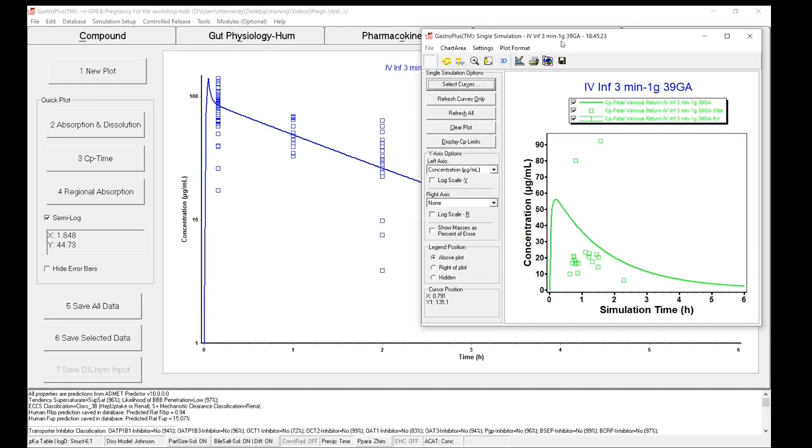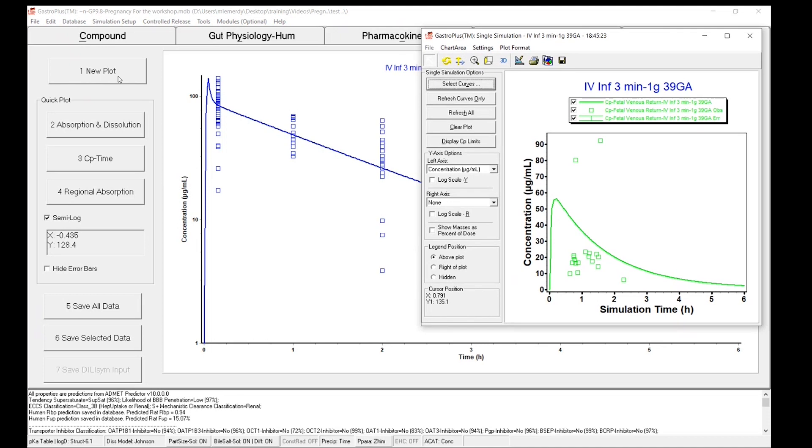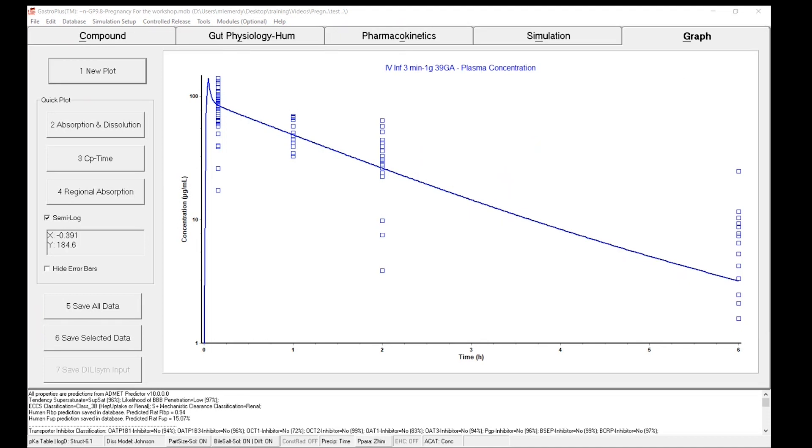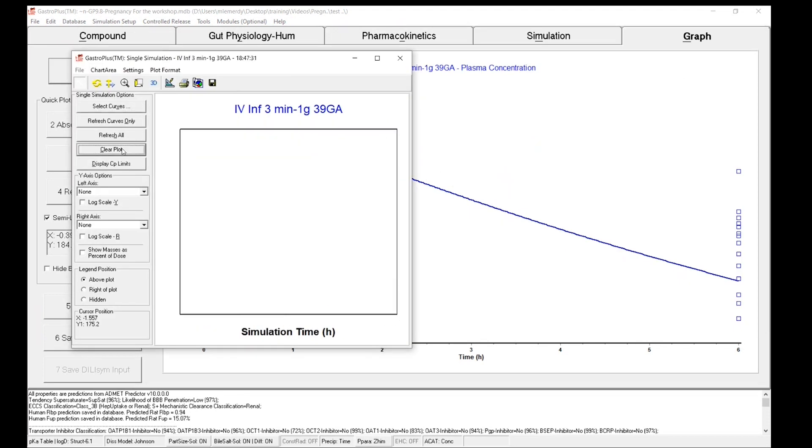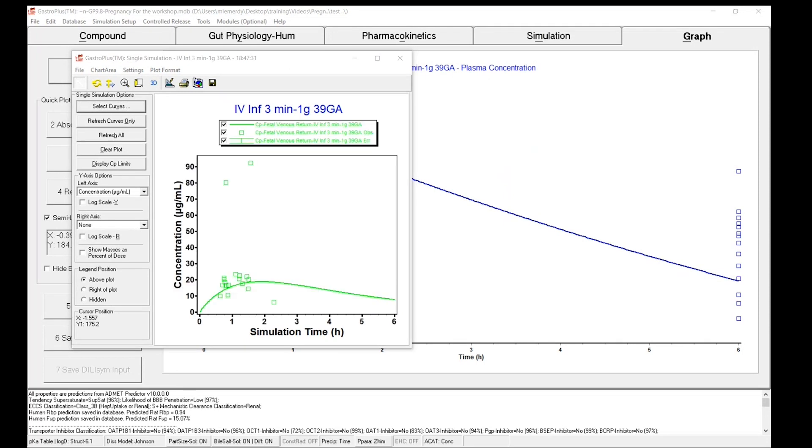Now, what I would like to do is to go to new plot again, clear this information, select. And on the graph, you will see the fetal venous concentrations.